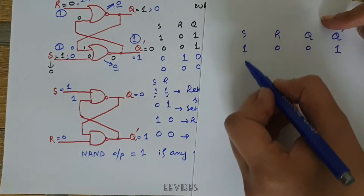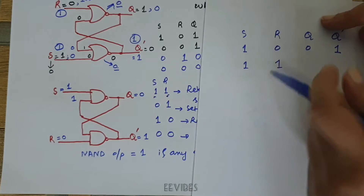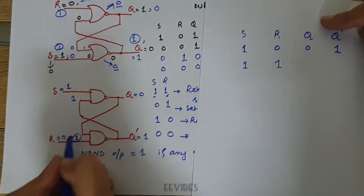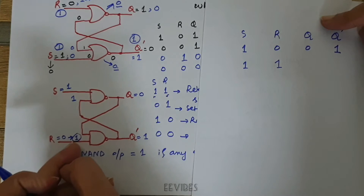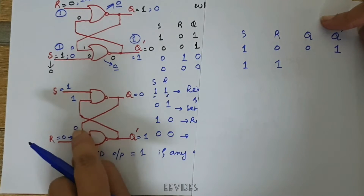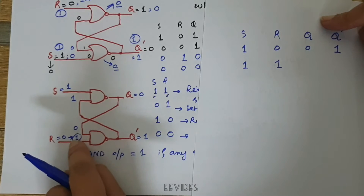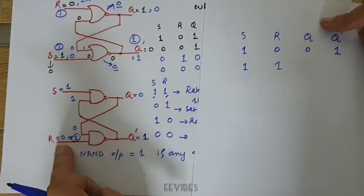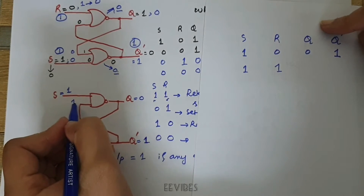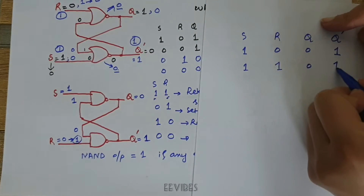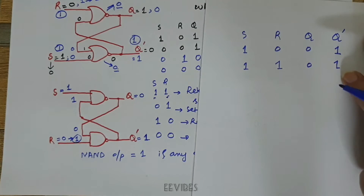Keeping S=1 and making R switch from 0 to 1 — what happens? When you change its value, the previous value Q=0 will be present on one of the inputs of the NAND gate while R=1. So 0 and 1 through NAND will produce output equal to 1 again, no matter that R has been switched from 0 to 1. This 1 is fed back on the upper NAND gate, producing output equal to 0. So you will see it retains its previous output — it doesn't change.